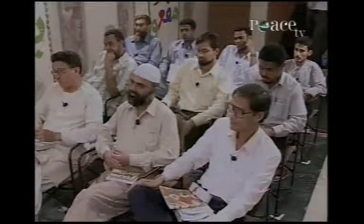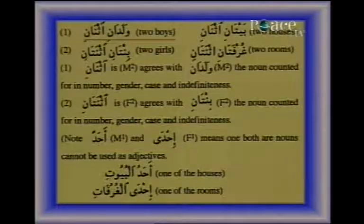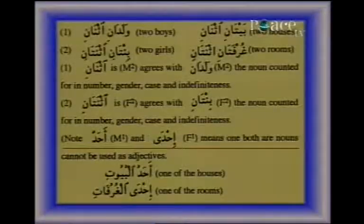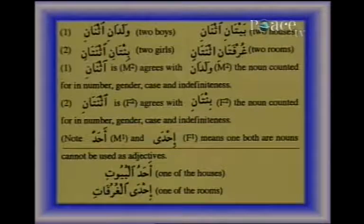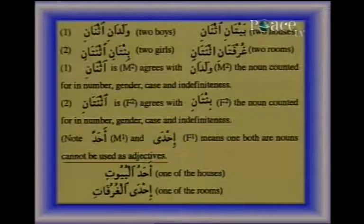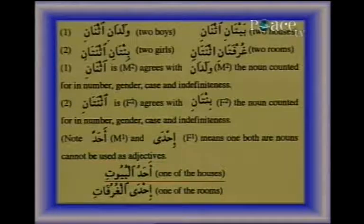Can the class give examples for both masculine and feminine for ithnan? Waladan ithnan — two boys. Bintan ithnatan — two girls. Note: ahad (masculine singular) and ihda (feminine singular) mean 'one' but both are nouns and cannot be used as adjectives. Ahadul buyut — one of the houses. Ahadul ghurfat — one of the rooms. Isnan (M dual) and Isnatani (F dual) are also nouns and duals, but they also form adverbial and possessive nouns.